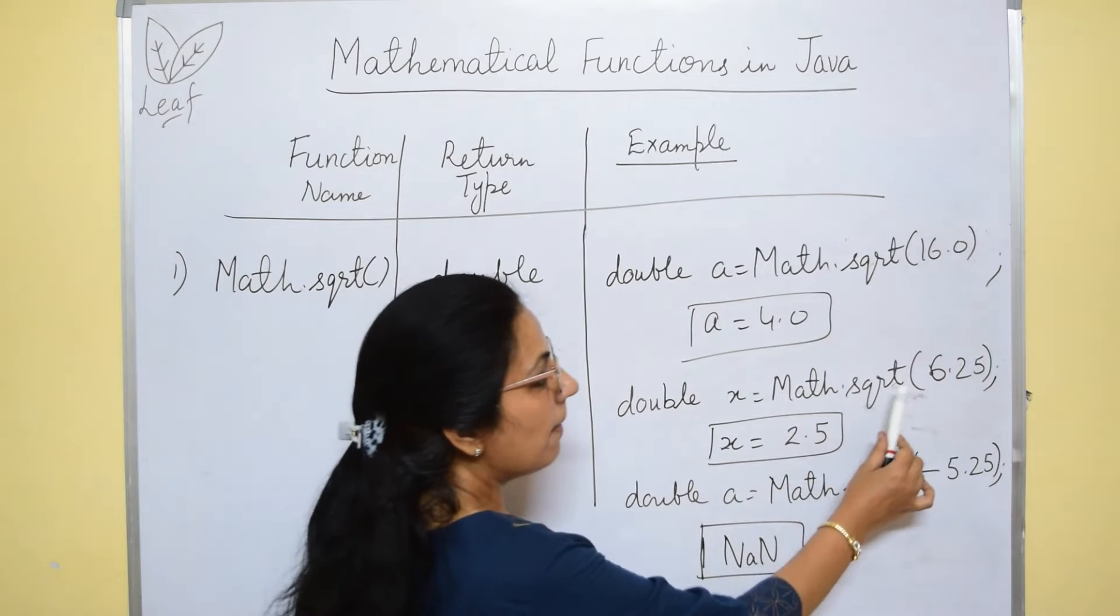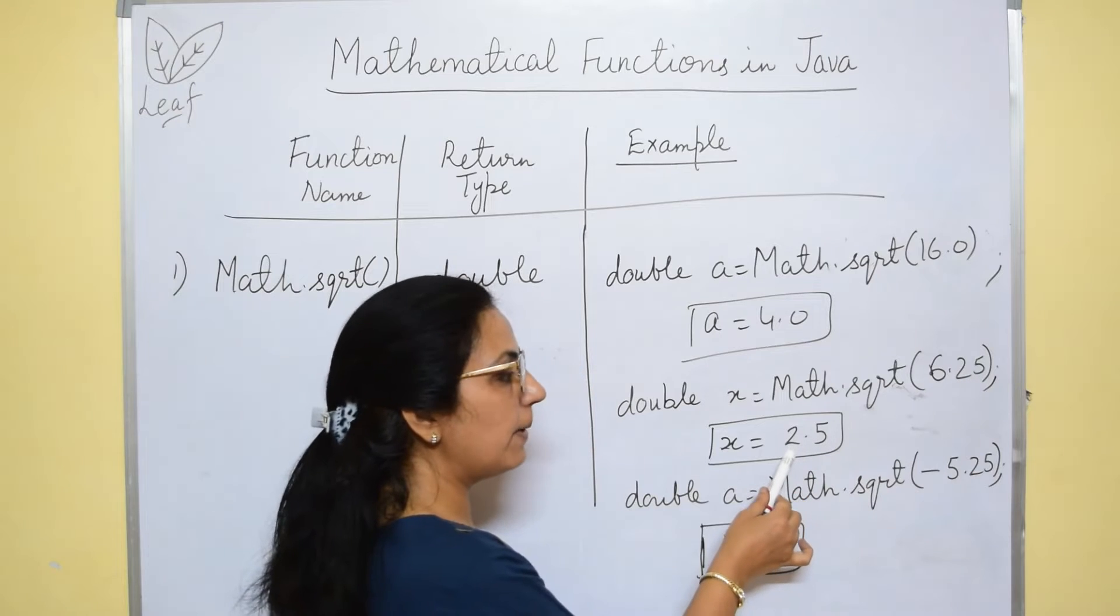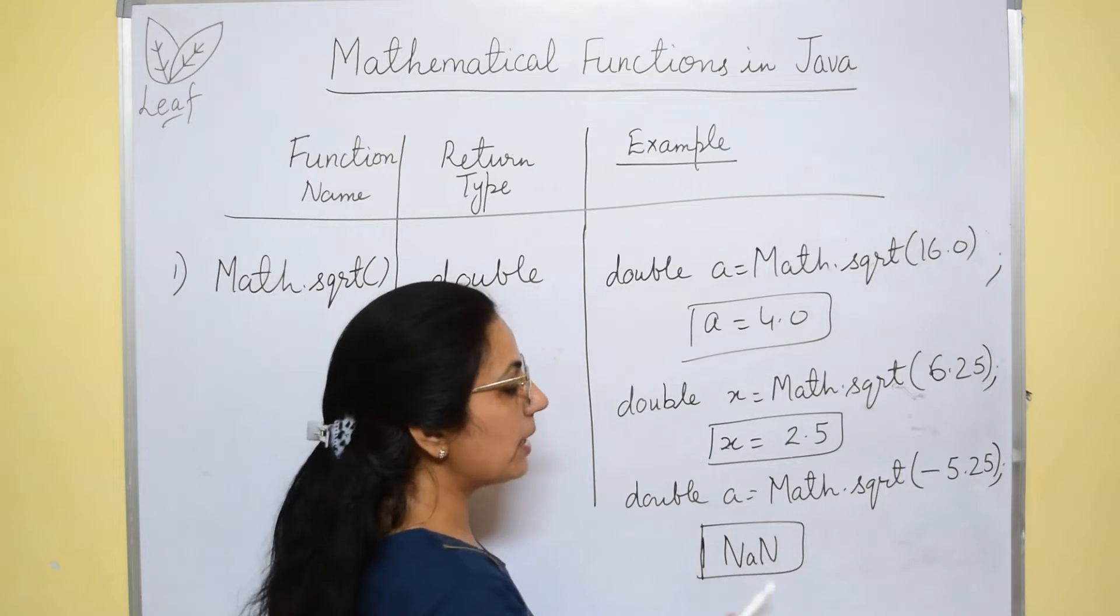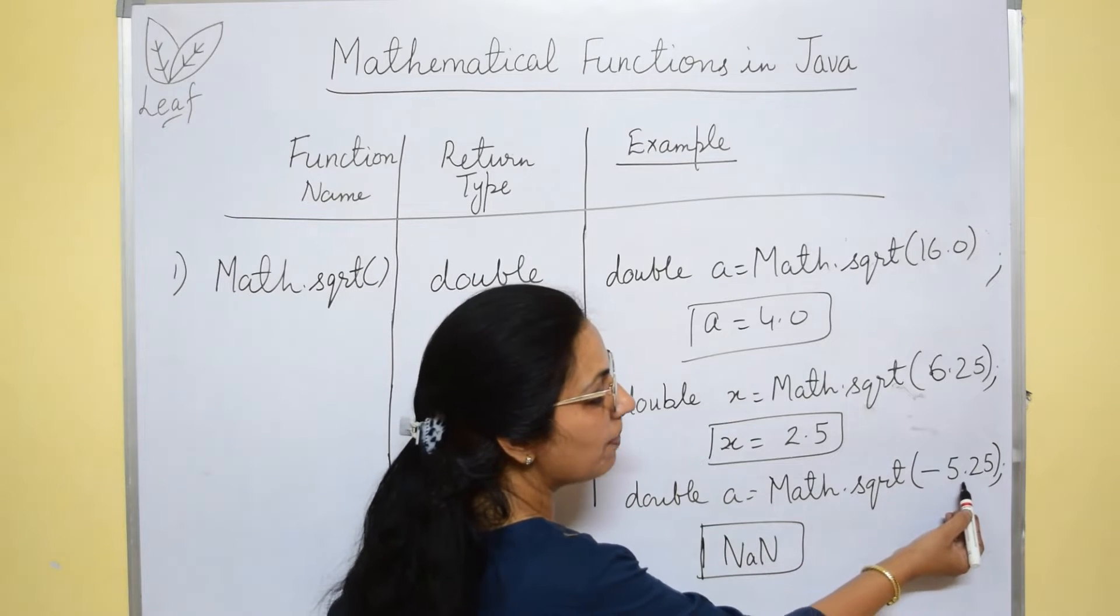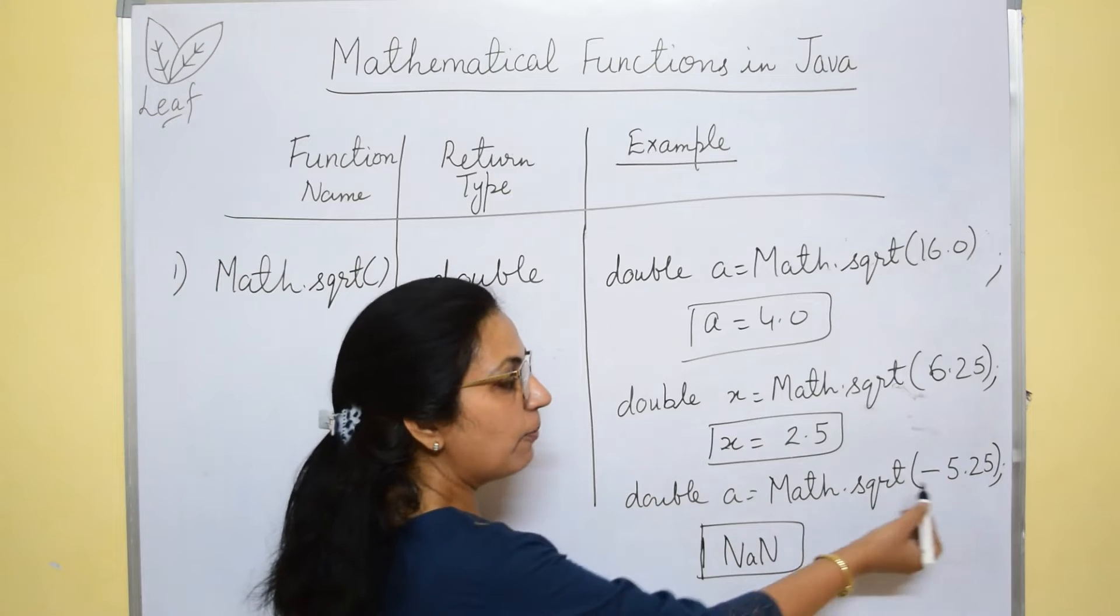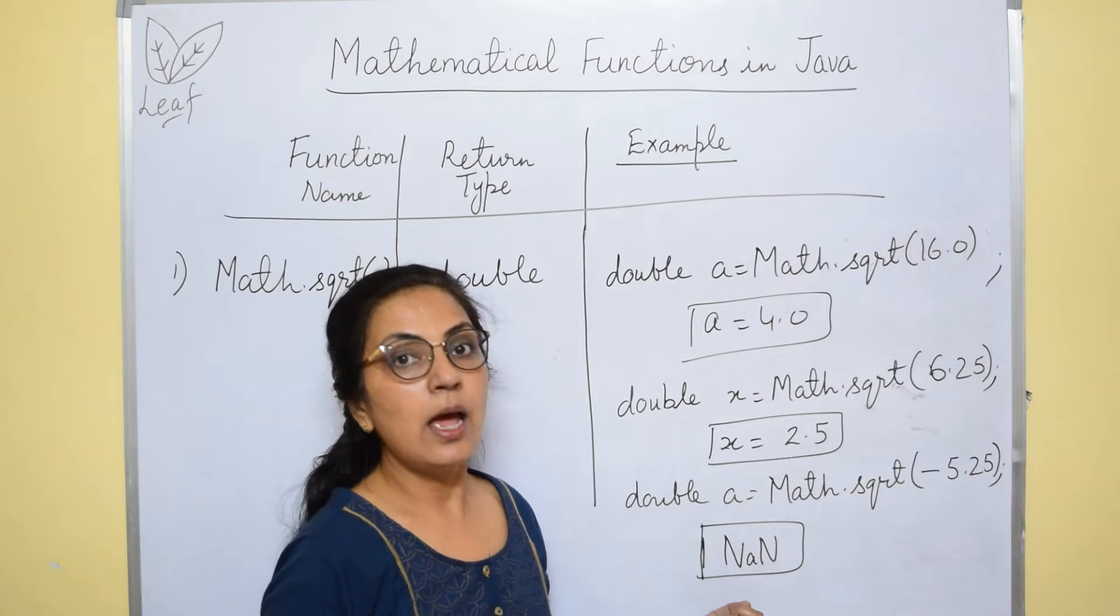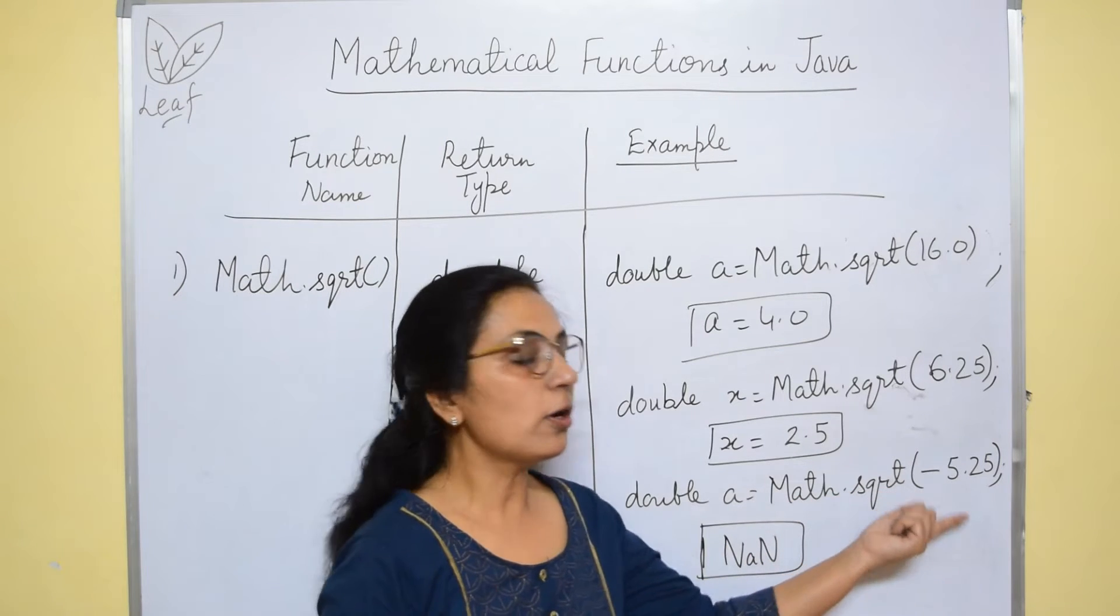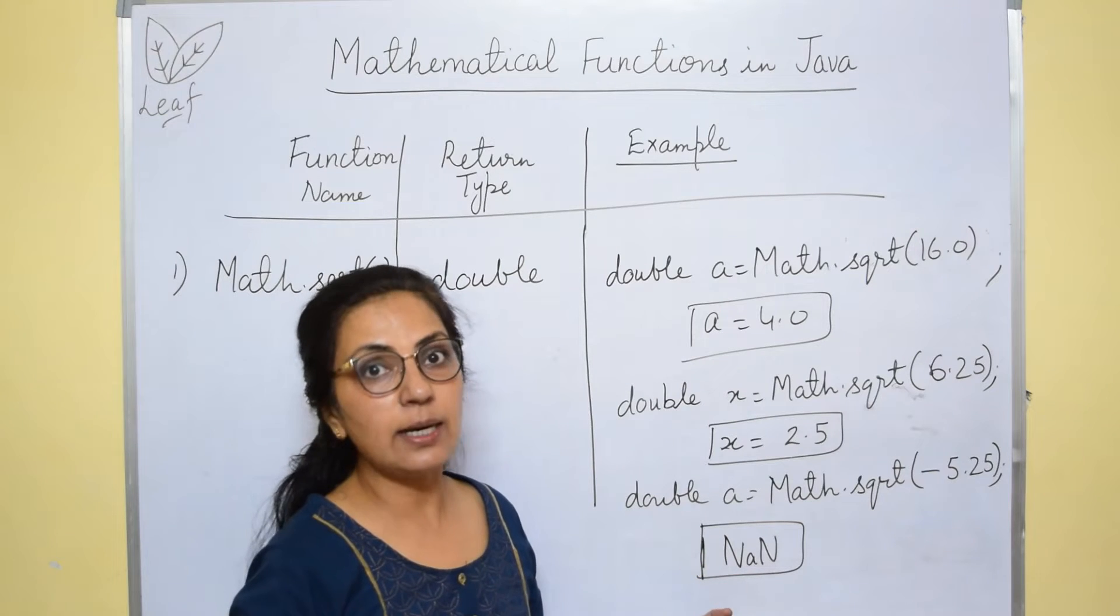Next, if you give math.sqrt of 6.25, answer will be 2.5. Now, next if I try to give a negative number, math.sqrt of -5.25, then the output which it will generate is NAN. We cannot calculate the square root of a negative number. So the output is NAN, that is not a number.